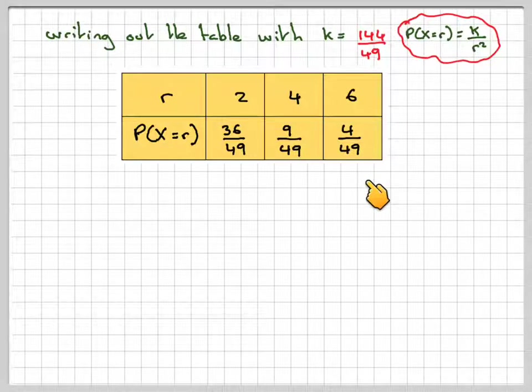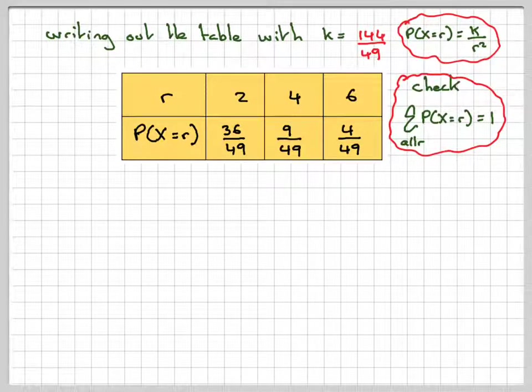Notice if I do 36 plus 9 plus 4, I get 49 out of 49, which makes all the probabilities equal to 1, which makes this a discrete random variable. Discrete because it only takes on exact values.